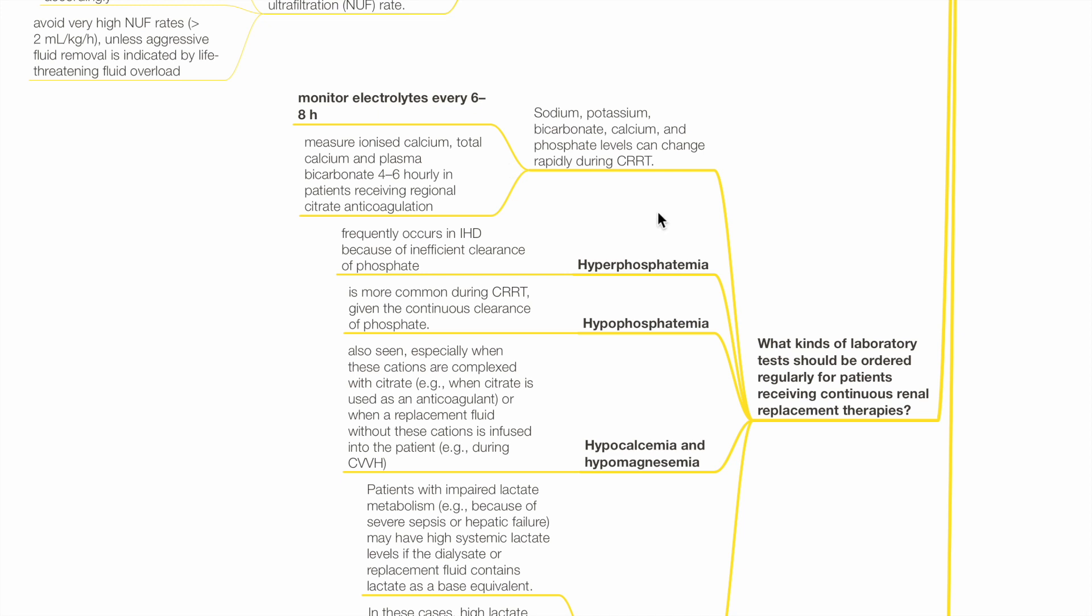Hyperphosphatemia frequently occurs in IHD due to inefficient clearance of phosphate. Hypophosphatemia is more common during CRRT given continuous clearance of phosphate.